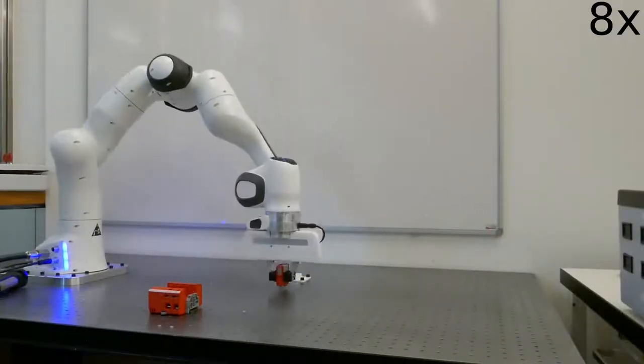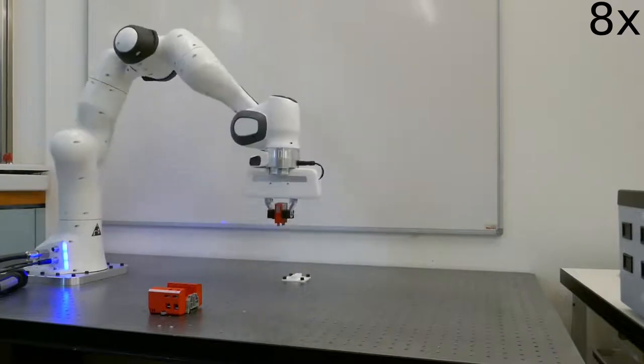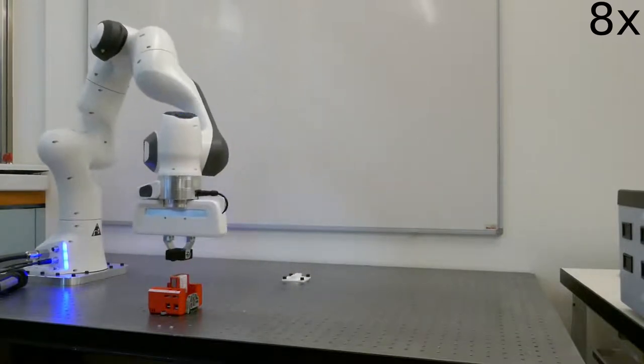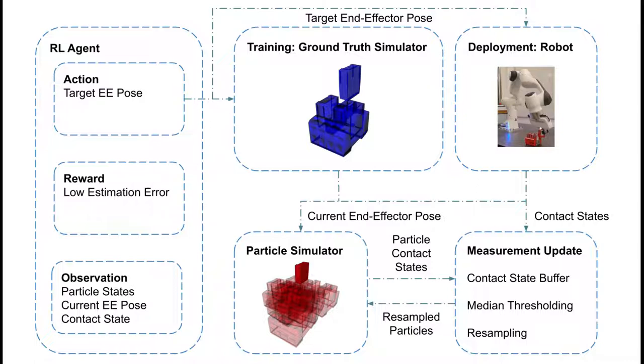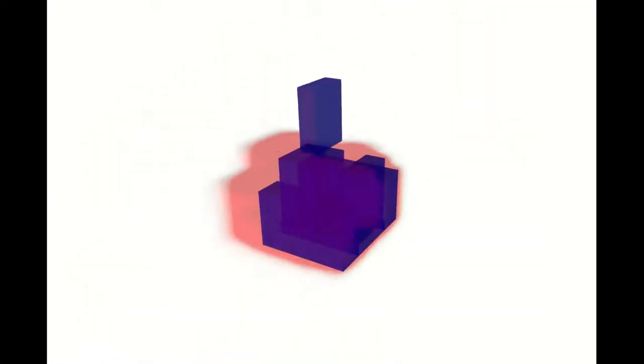We present a high-precision contact-based state estimator for assembly tasks. A policy is trained with reinforcement learning to decide how the robot should engage with the environment. It collects rewards by reducing the estimation uncertainty.